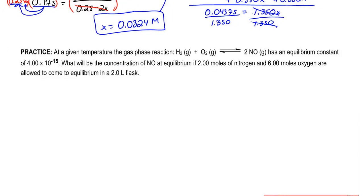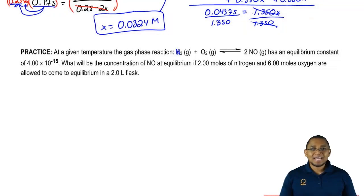Now that you guys have seen that one, I want to see if you guys can try to tackle this particular question. We're going to say at a given temperature, the gas phase reaction, H2 gas plus O2 gas gives us 2NO gas, has an equilibrium constant of 4.00 times 10 to the negative 15. What will be the concentration of NO at equilibrium if 2 moles of nitrogen and 6 moles of oxygen are allowed to come to equilibrium in a 2-liter flask? So what we need to realize here is, do we need to do an ice chart or not? Once you guys figure that out, I want you guys to at least attempt to do this. Don't worry if you don't know where to go with it. Just click on the explanation button and I'll appear and I'll be able to answer it. Look at the strategies that I use in order to solve this particular one. Good luck guys, attempt it on your own first. If you get stuck, go and click on the explanation button.